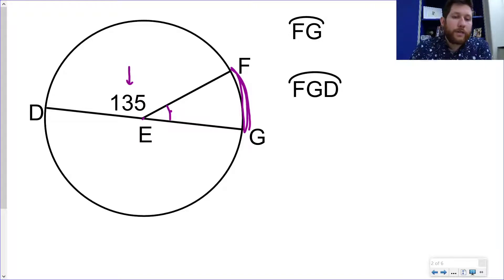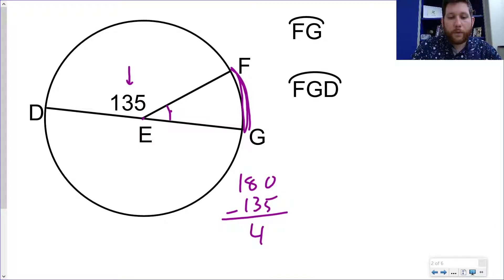Or you could also think of it this way, that from D to G is half of the circle, and I can think about that as being 180. So if I want to solve for FG, what I'm going to do is I'm going to do 180 minus 135, and I get 45 degrees.